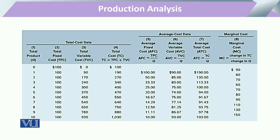Now coming to this table: we can take any type of production example — agriculture, textile, engineering, or chemical. In the first column we put the amount of output Q. When Q is 0, the total fixed cost is still present because it is a sunk cost that has already been invested. Since the production process has not started, variable cost is 0, and when we add 100 plus 0, the total cost equals 100.